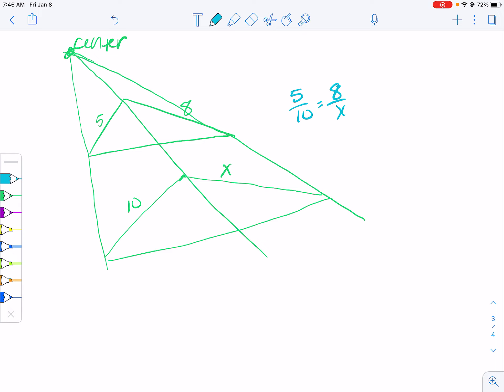The other way that you can do it is you can say, well, from 5 to 10, we multiplied by 2. So to go from 8 to x, we multiply by 2, which gets us to our x. So we get 16 equals x.